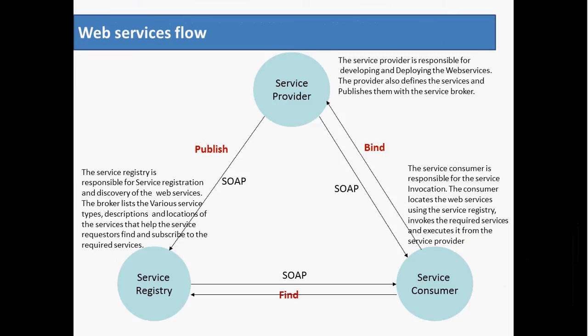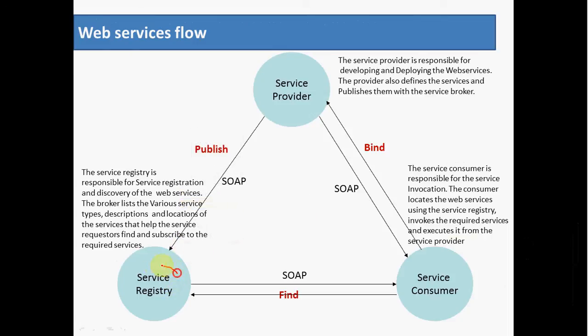How do web services communicate? There are various components involved. We have the service provider, the service consumer, and the service registry. The service provider is the organization responsible for developing, deploying, and publishing web services to the service registry. The service registry is a collection of services where respective web services are available and can be located. Consumers use the service registry to identify a particular service and access it, then communicate directly with the service provider.